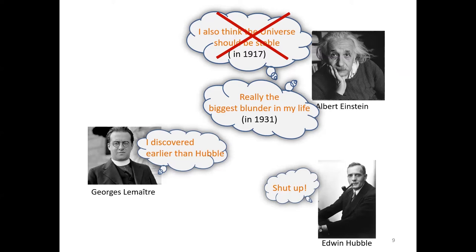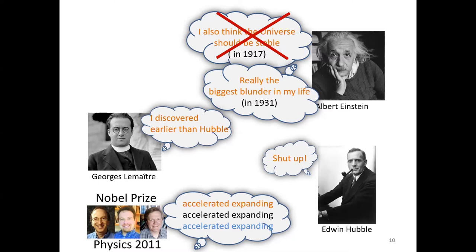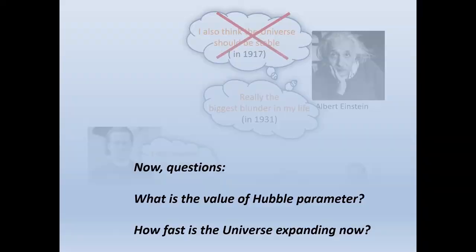With better observation in the last 20 years, we have known the universe is not only expanding, but also an accelerated expanding one. As we have seen, the expanding rate of our universe is always the most important topic in cosmology. And now we have to face two questions: How fast is the universe expanding now? And what's the value of Hubble's parameter?